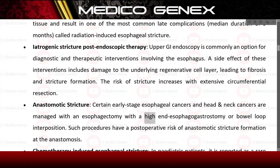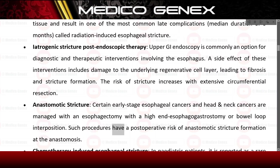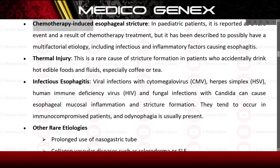Anastomotic stricture: certain early-stage esophageal cancers and head and neck cancers are managed with an esophagectomy with a high-end esophagogastrostomy or bowel loop interposition. Such procedures carry a post-operative risk of anastomotic stricture formation at the anastomosis. Chemotherapy-induced esophageal stricture in pediatric patients is reported as a rare event resulting from chemotherapy treatment.